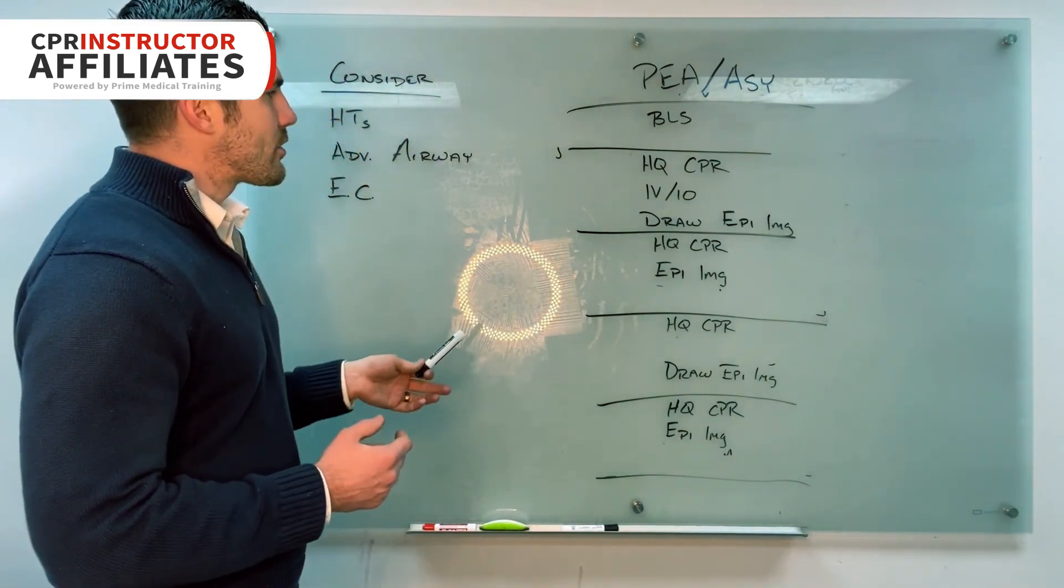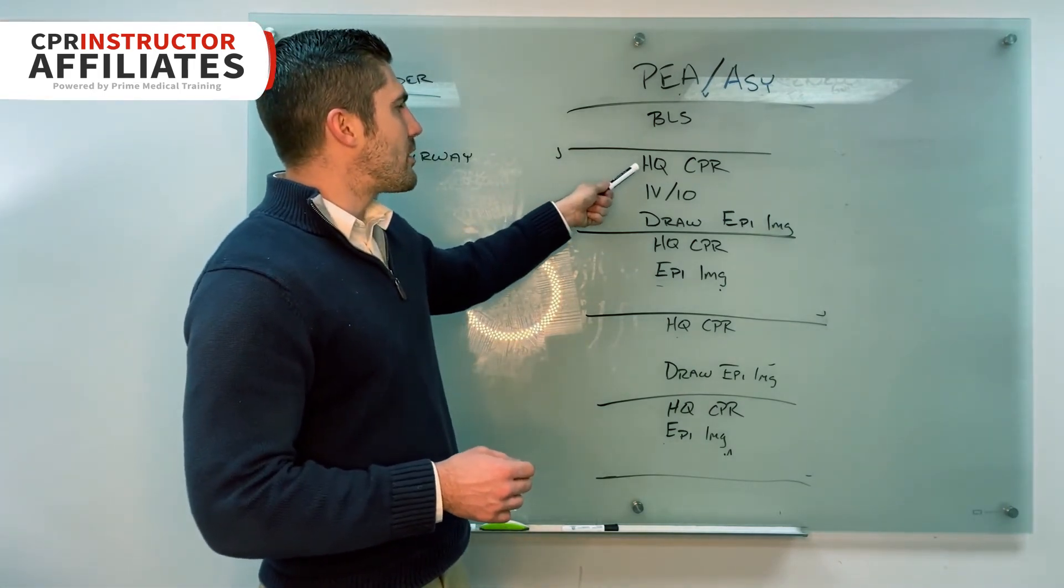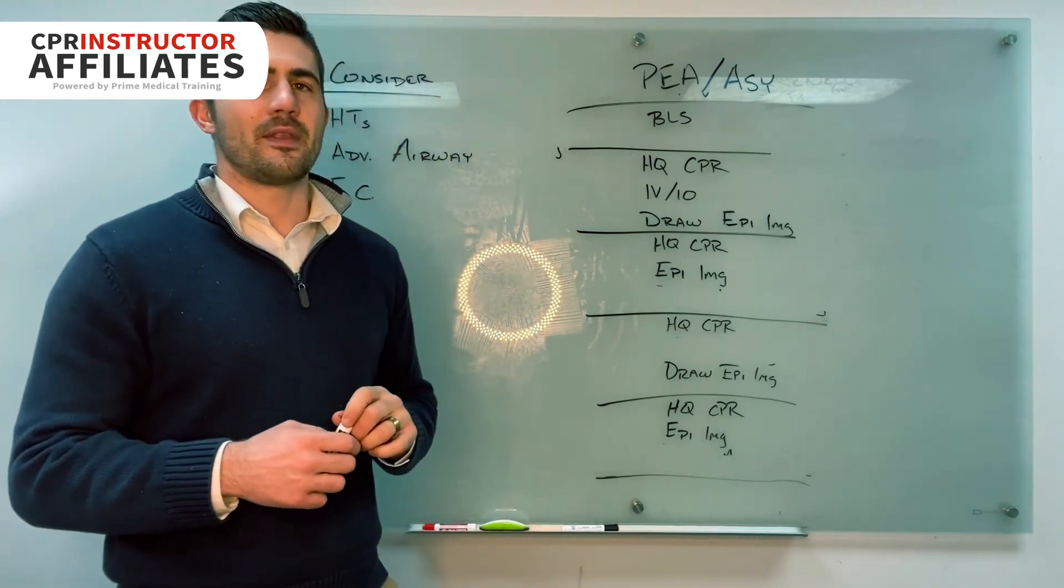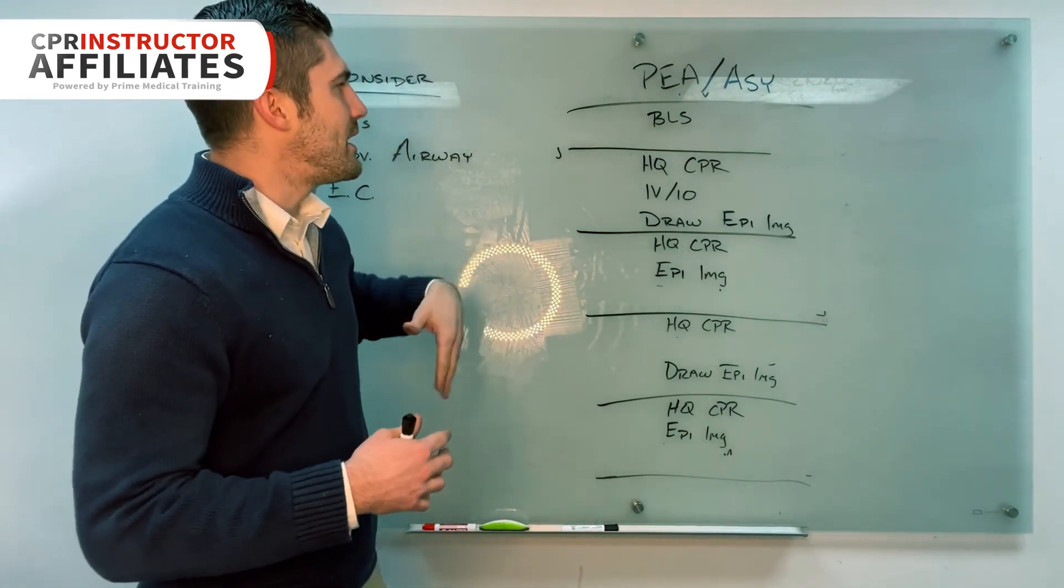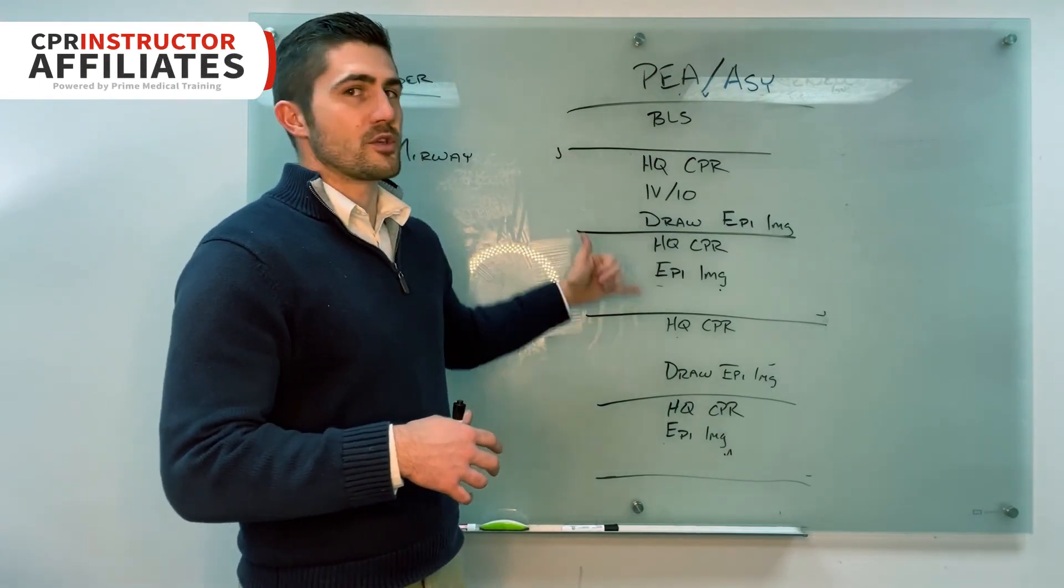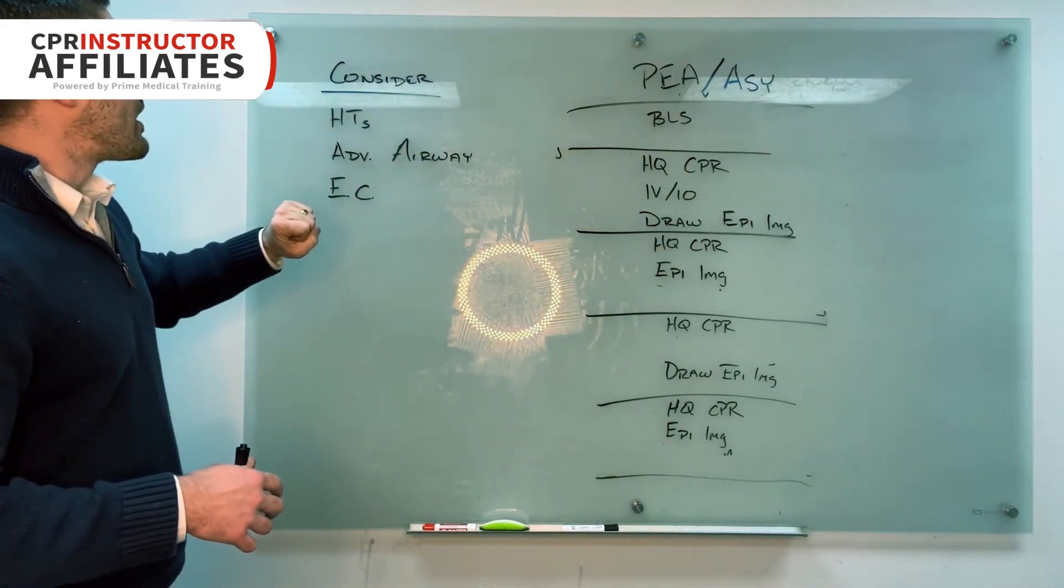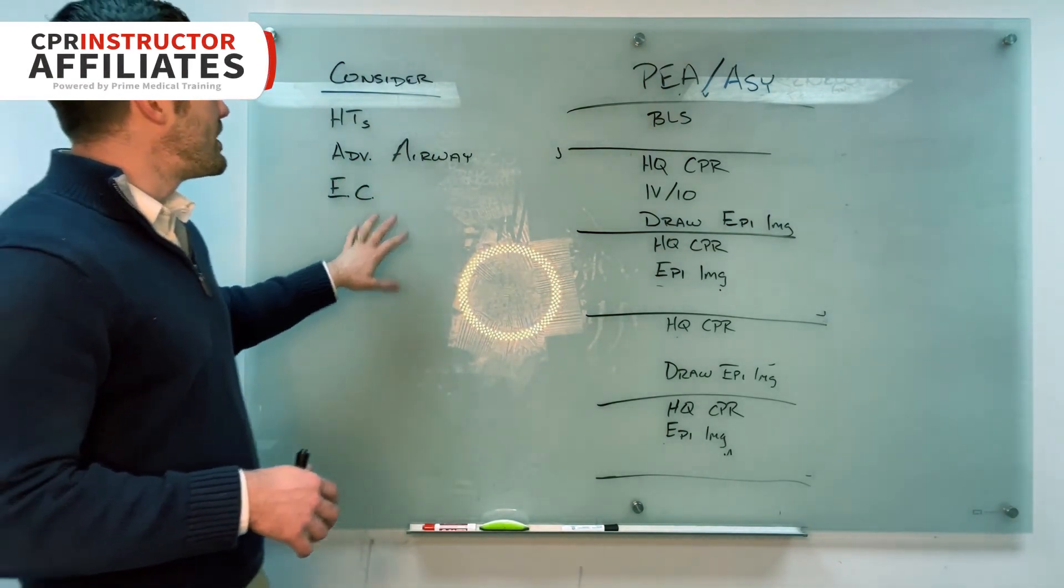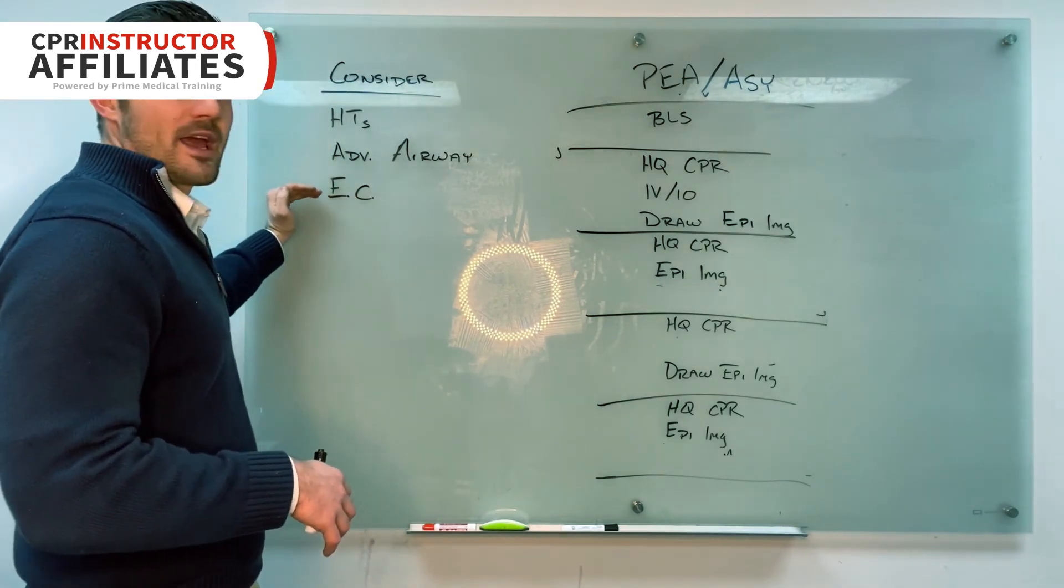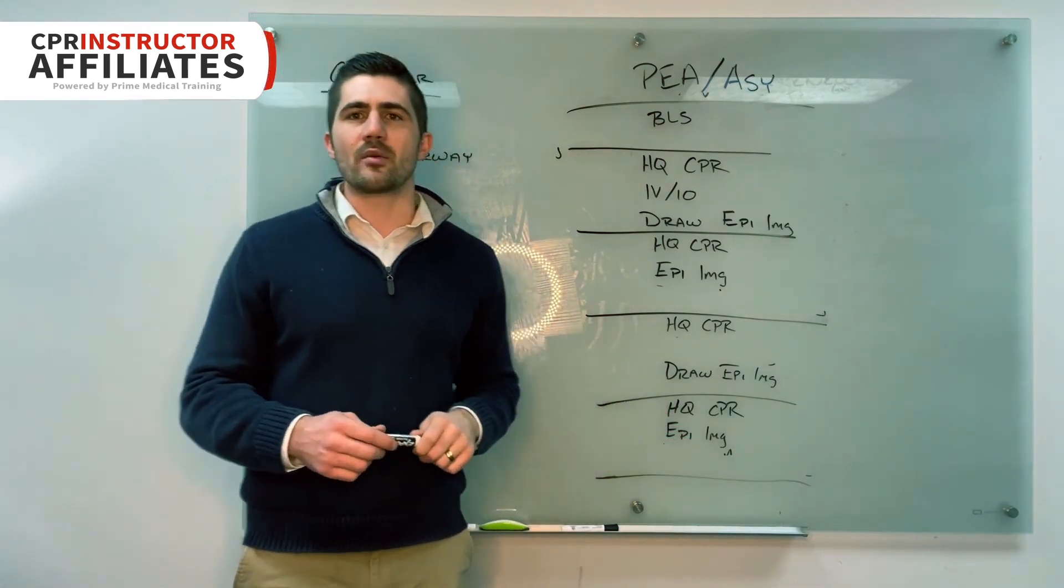Now that's the algorithm: shock, CPR, give a drug, draw a drug. Four things you need to remember. And then it gets even simpler when you go to PEA asystole. Now it's just CPR, give a drug, draw a drug. And of course I remind them finally at the end that we're still always going to be considering our H's and T's, advanced airway, and expert consultation every two minutes. So that's the cardiac arrest algorithm.